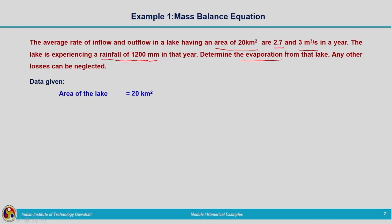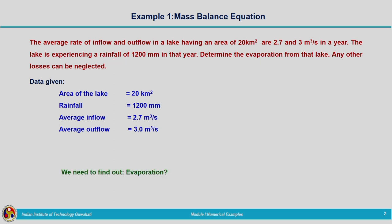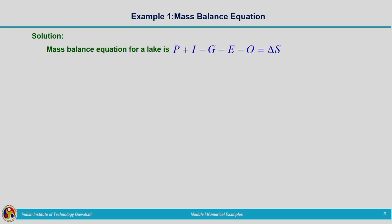What are the data given? Area of the lake is 20 kilometres square, rainfall 1200 millimetres, average inflow 2.7 metre cube per second, average outflow 3 metre cube per second. We need to find out the evaporation. The mass balance equation for a lake can be written as P + I − G − E − O = ΔS. Groundwater seepage and storage are not given, so G and ΔS can be neglected.